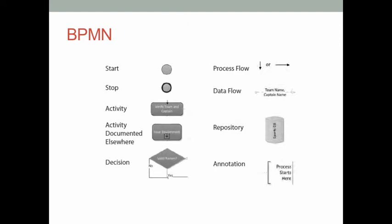We use Business Process Management Notation, or BPMN, to design the supply chain system model. We always use a dot to show the starting point of a business process, and a dot with a black circle on the edge to show the ending point. During the business process, if you want to make a decision — for instance, in a quality control process checking if a product meets quality criteria — we use a diamond to show the decision point.